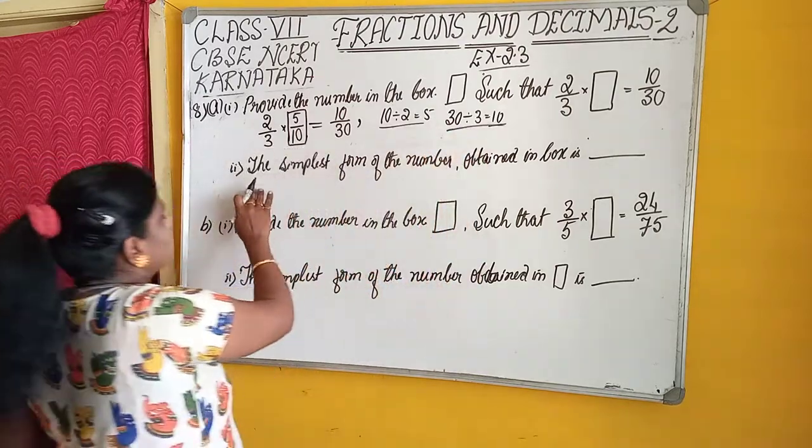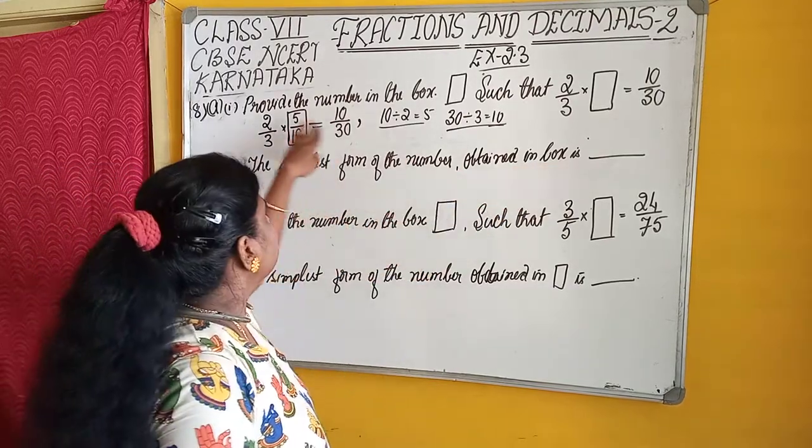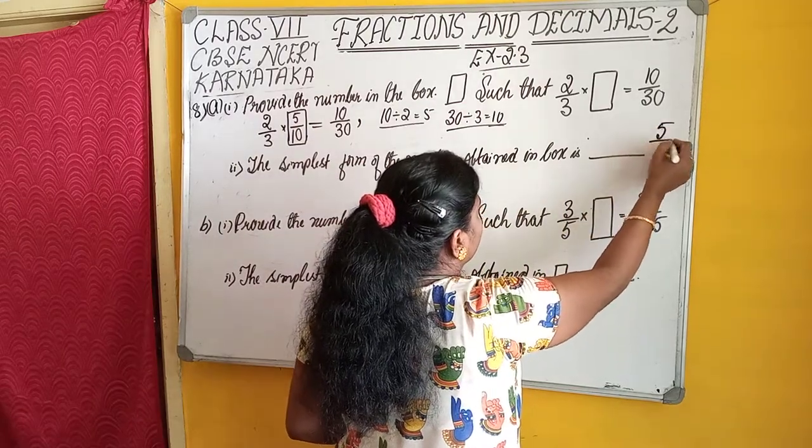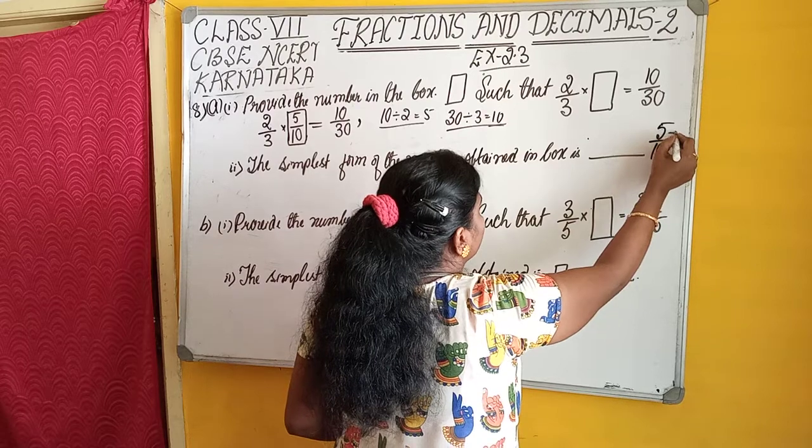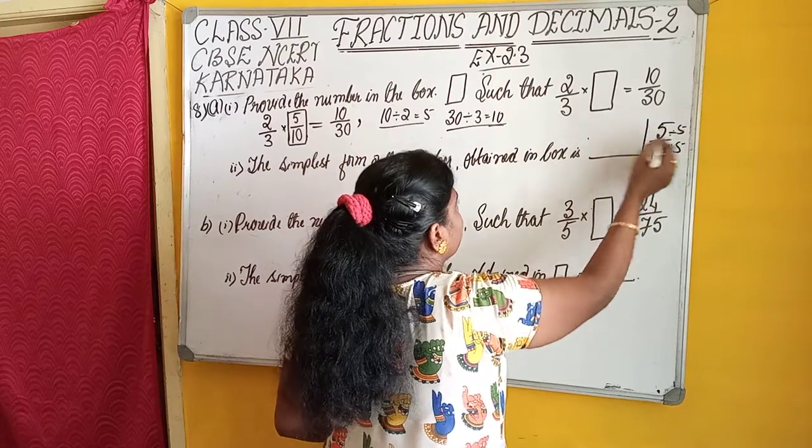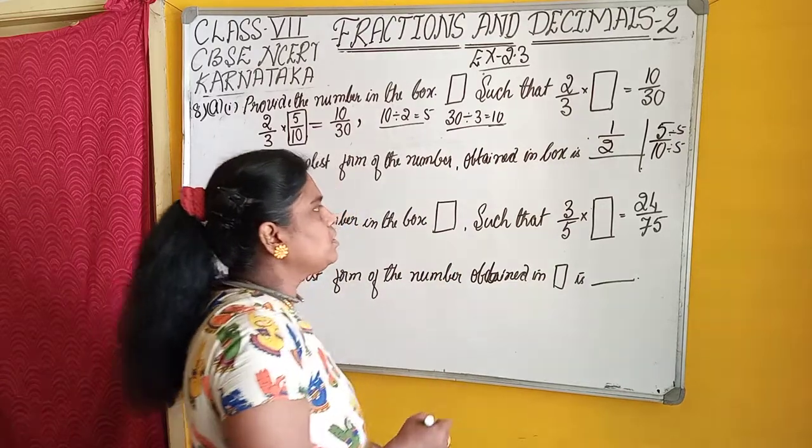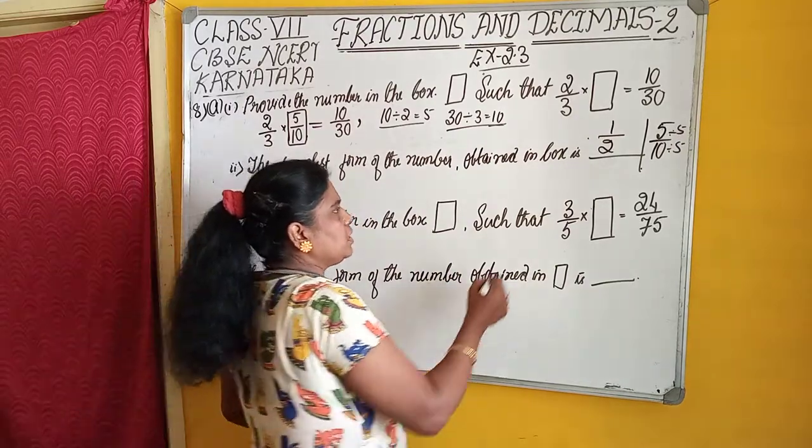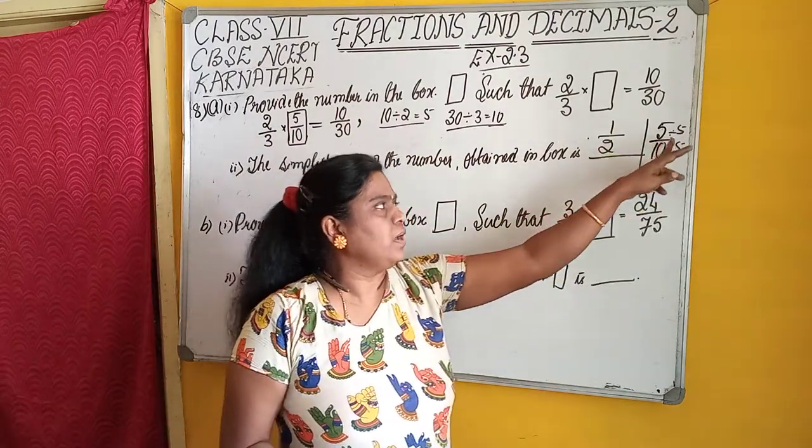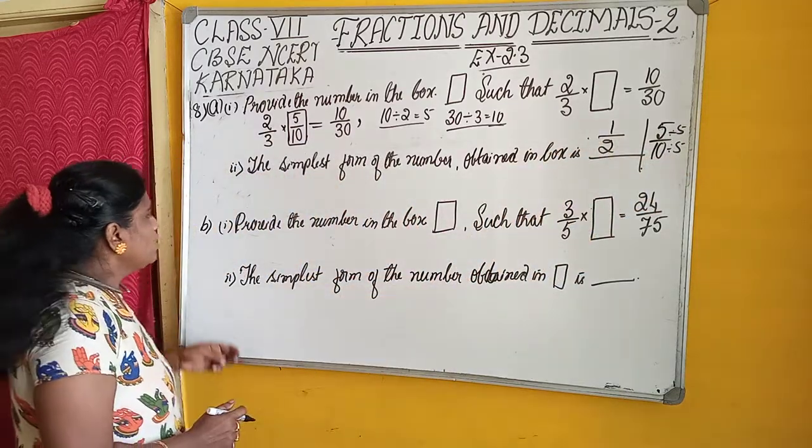Now, the simplest form. Next question: the simplest form of the number obtained in the box. In the box obtained is 5/10. The simplest form of 5/10, it is divided by 5. What we will get? 5 - 1, and 5 - 2. The simplest form obtained in the box is 1/2. If we simplify 5/10, we will get 1/2. 5 divided by 5 is 1, 10 divided by 5 is 2.